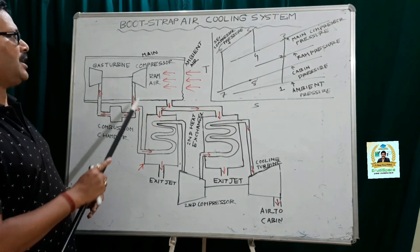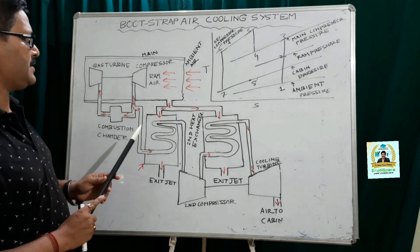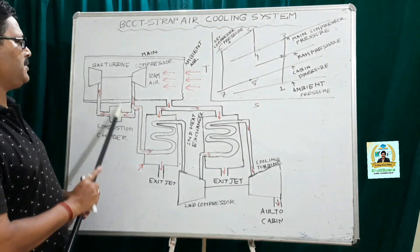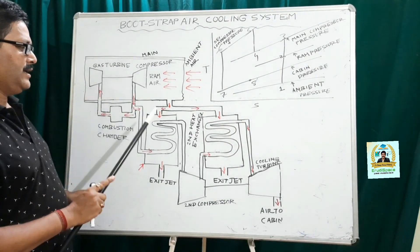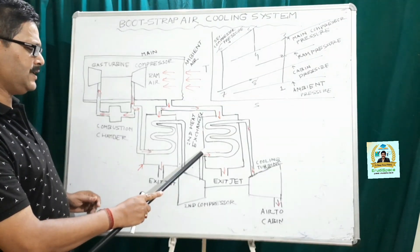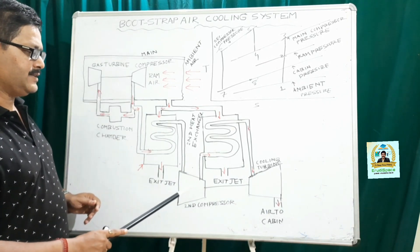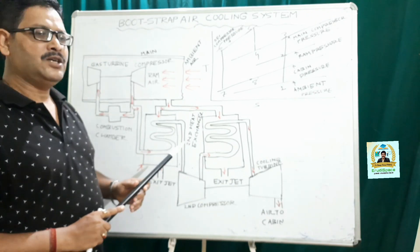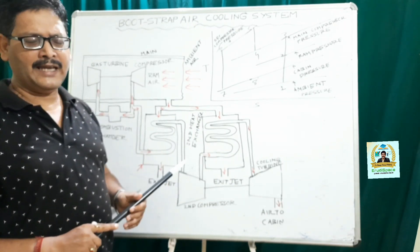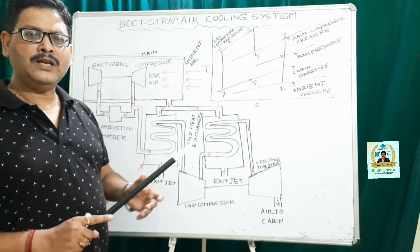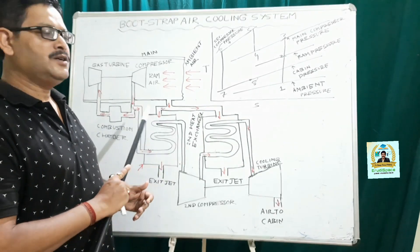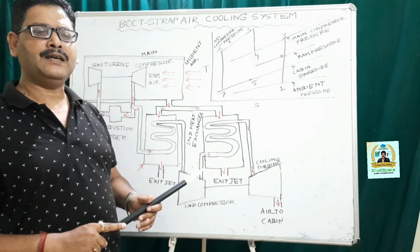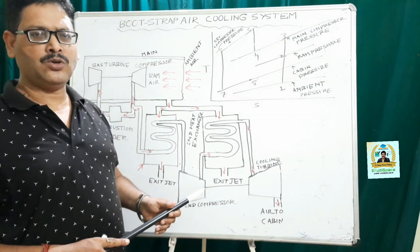The essential components of the bootstrap air cooling system are your diffuser, your compressor, your combustion chamber, your turbine, two heat exchangers, the second compressor, and the cooling turbine. Any aircraft air cooling system should improve the gas turbine cycle because the gas turbine cycle is very important to run the aircraft.